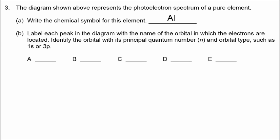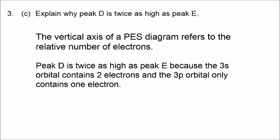The peaks in order from left to right on the PES diagram are 1S, 2S, 2P, 3S, and 3P. Peak D is twice as high as peak E because the vertical axis represents the relative number of electrons: the 3S orbital for aluminum contains 2 electrons, whereas the 3P orbital for aluminum only contains 1 electron.